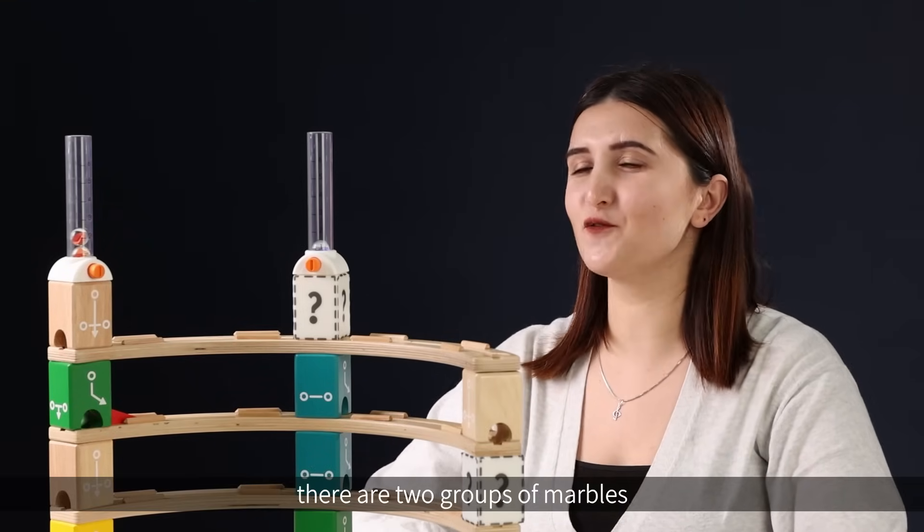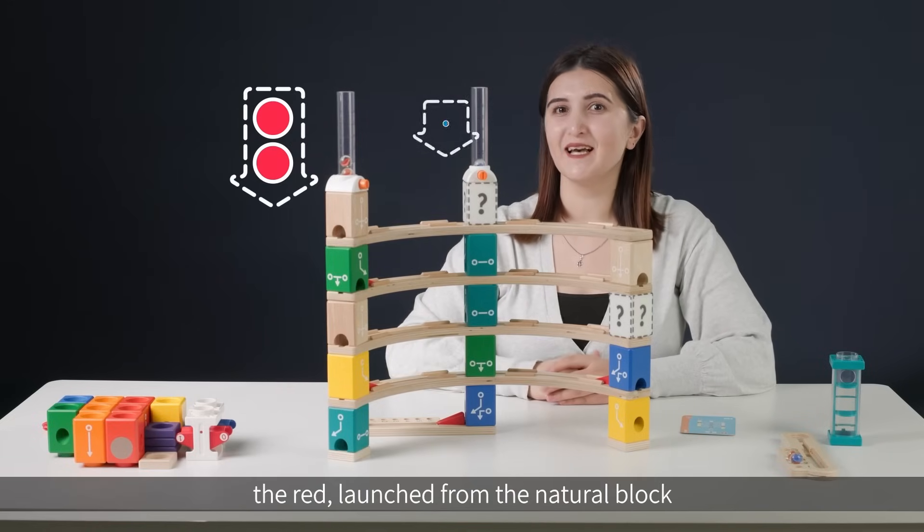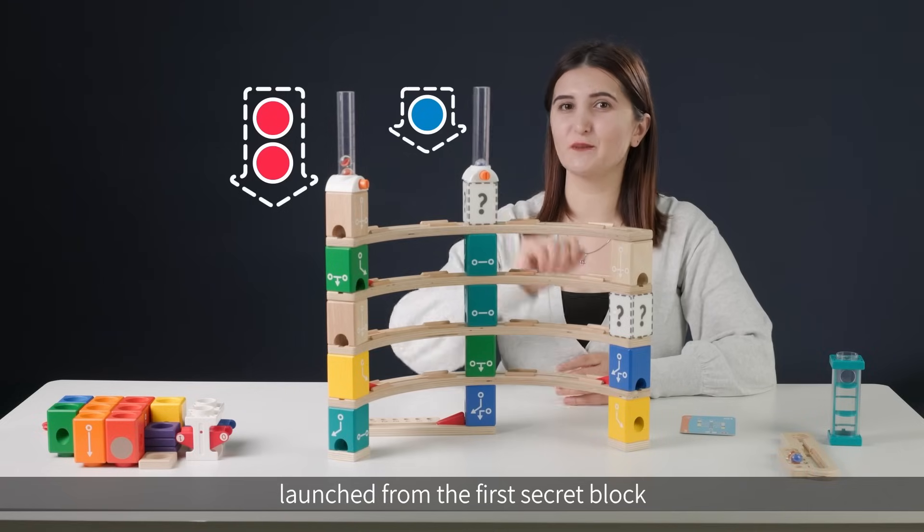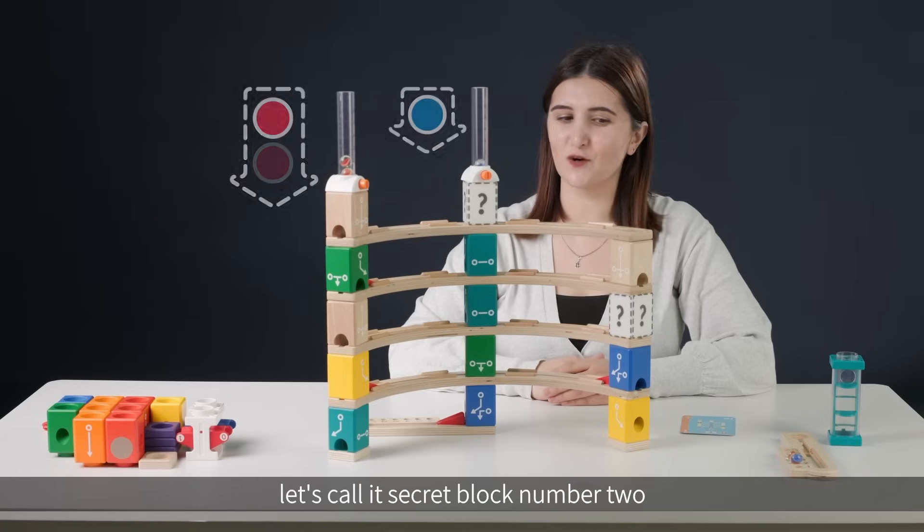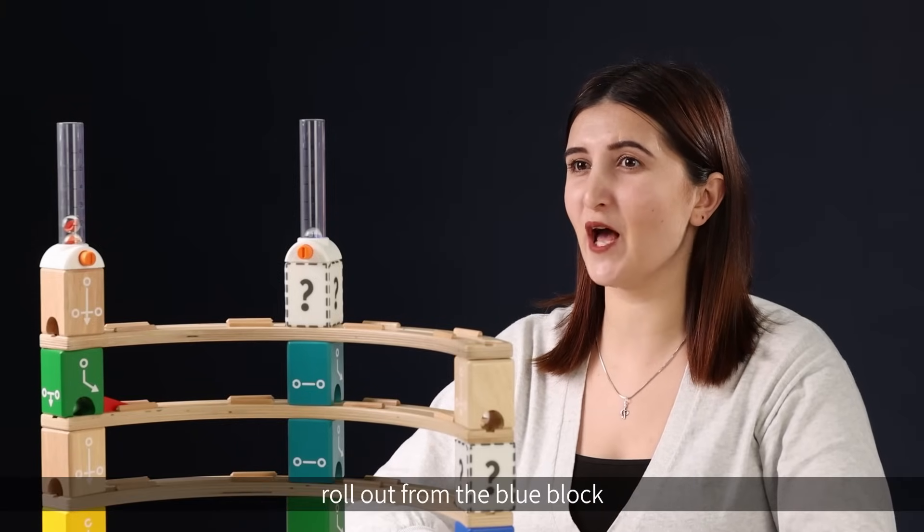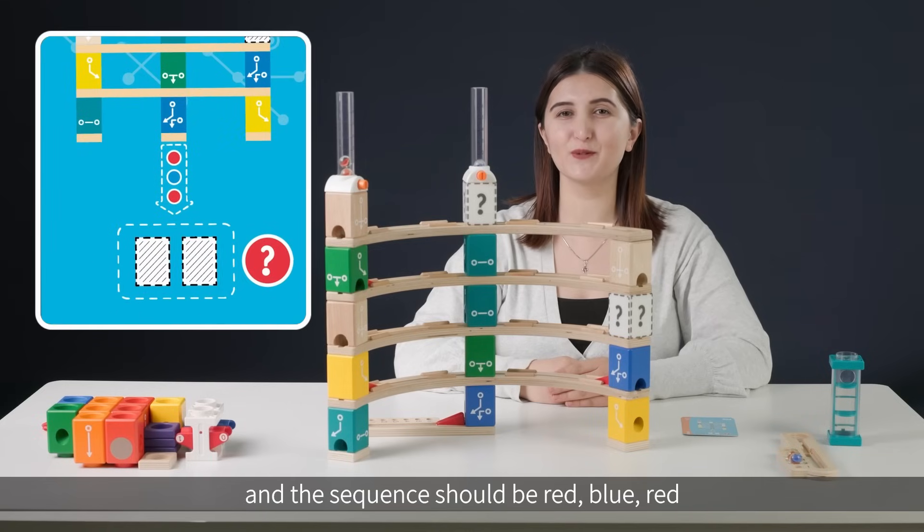there are two groups of marbles. One is red, the red launch from the natural block and the other is blue, launched from the first secret block. The secret block on the third floor, let's call it secret block number 2. And our challenge is to make the marbles roll out from the blue block and the sequence should be red, blue, red.